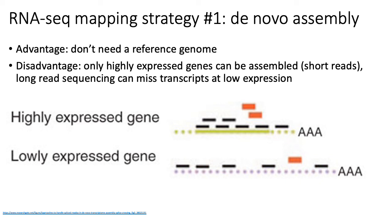The advantage of de novo assembly is that you don't need a reference genome to map reads to the transcripts. The primary disadvantage is that you can only really rebuild the highly expressed genes. Even if you use long read sequencing, although long reads avoid many assembly problems, you're typically able to sequence fewer transcripts, so you may still miss a lot of the poorly expressed transcripts.